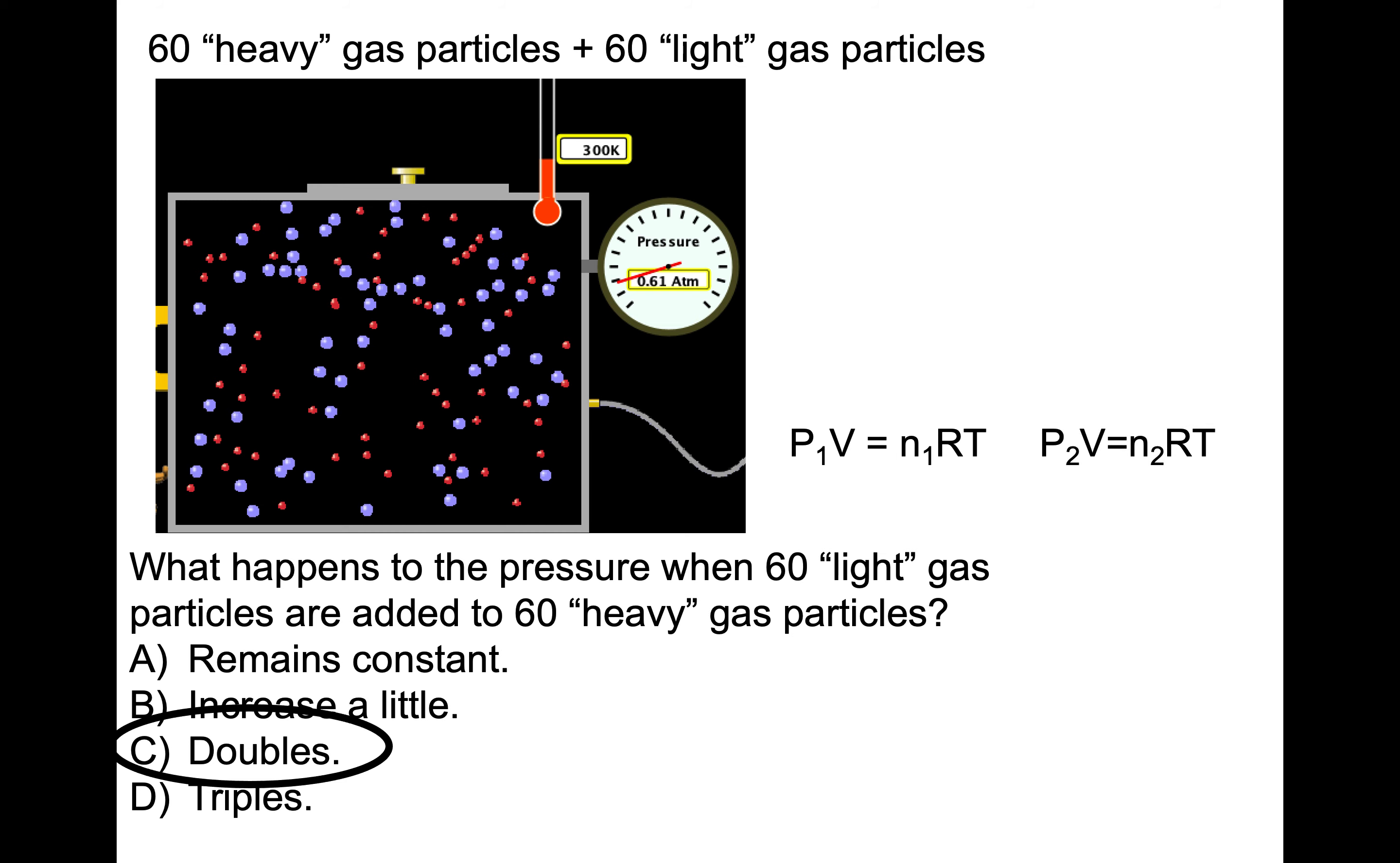Now in terms of the light particles, we can also consider those to be an ideal gas. If we use our PV equals nRT expression for those, we have a certain number of those particles, n sub 2, exerting a pressure. Combined, the total pressure is due to the total number of particles. Notice these values, n sub 1, n sub 2 - nowhere in there does it say is it a light or heavy particle.